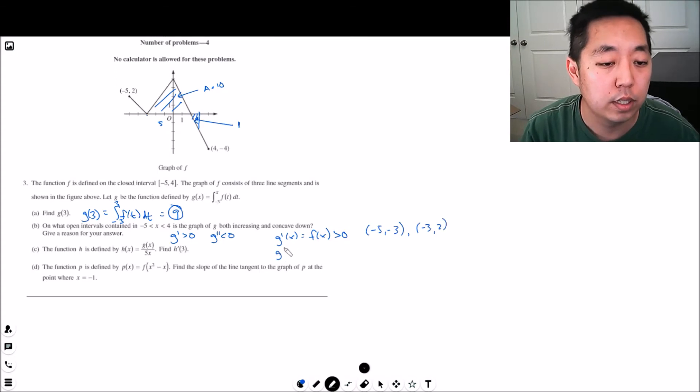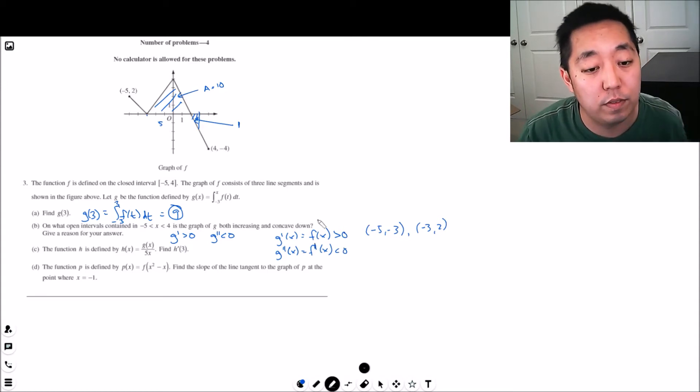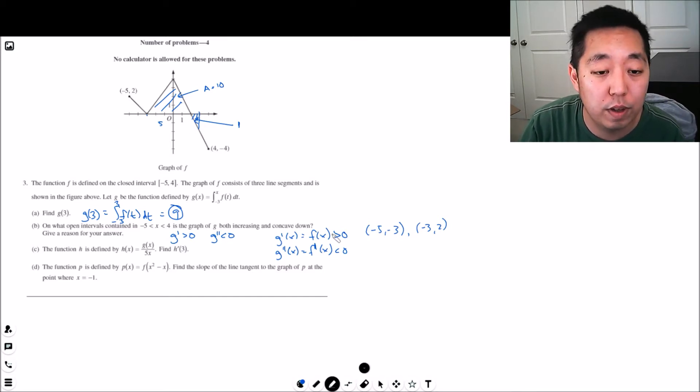Right now the second derivative of g of x is the same as the first derivative of f of x and I want that to be less than zero. So when is the first derivative of f less than zero? That's when the slopes of f are negative. Slopes of f are negative between negative five and negative three, and between zero and four. So if I look at when both these conditions are matched, I have negative five to negative three and then between zero and two.